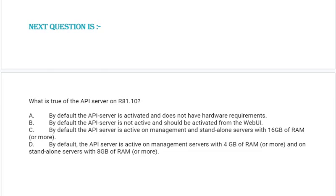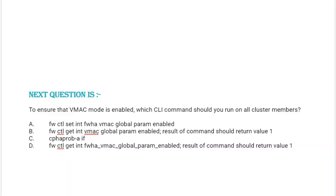Next question: What is true for the API server on R81.10? Option A: By default the API server is activated and does not have hardware requirements. Option B: By default the API server is not active and should be activated from the web UI. Option C: By default the API server is active on management and standalone servers with 16 GB of RAM or more. Option D: By default the API server is active on management servers with 16 GB of RAM or more and on standby servers with 8 GB or more. Correct answer is option D.